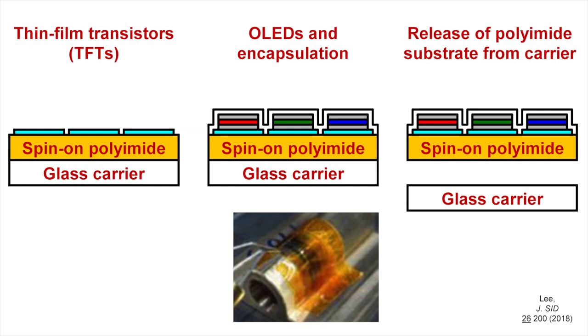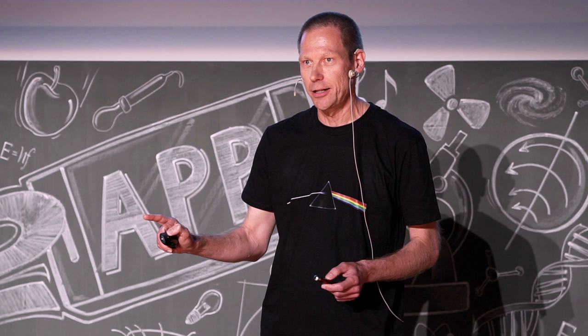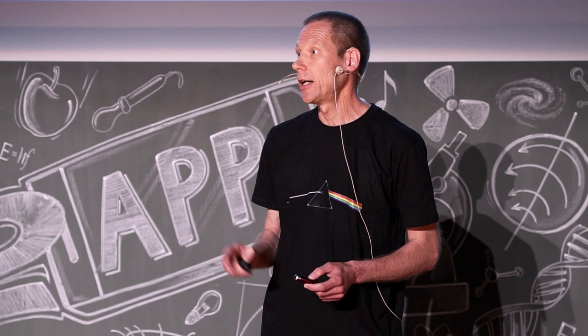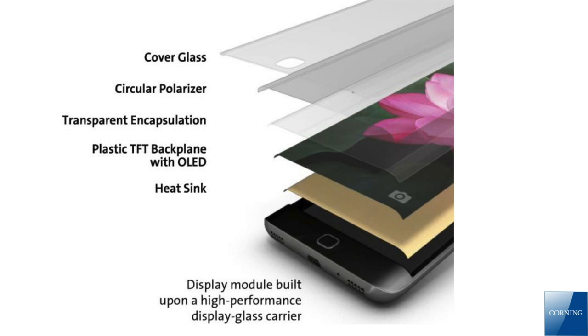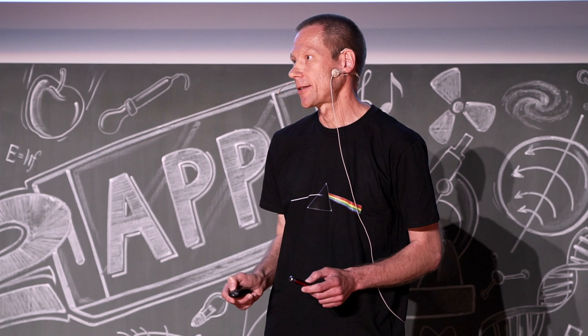They start with a rigid, thick glass carrier, but first coat it with a thin layer of a very particular polymer — usually polyimide — and then fabricate the entire display: electronic circuits, encapsulation, organic LEDs, the works, on the surface of that thin polymer layer. In a final step, this polymer layer, together with the entire display, is delaminated from the glass carrier. For a brief moment, we have a fully flexible display — only briefly, because in the very next step, this flexible display is mounted onto a curved metal heatsink and sealed with curved glass.